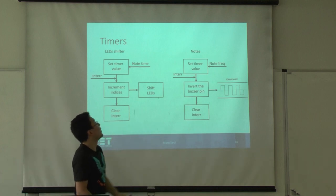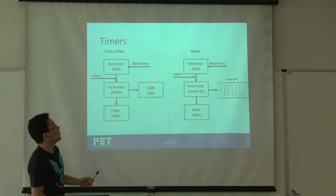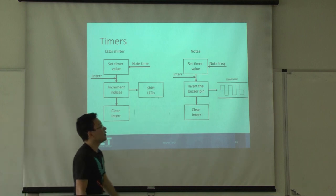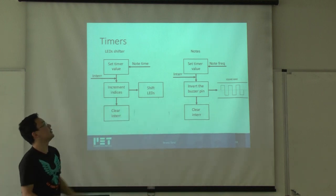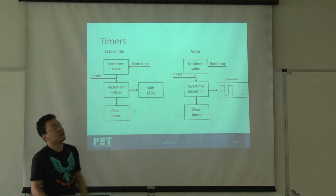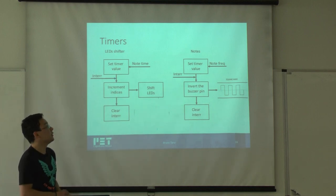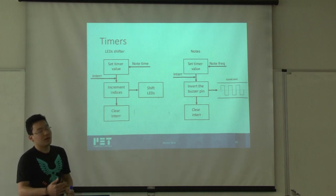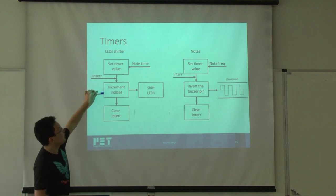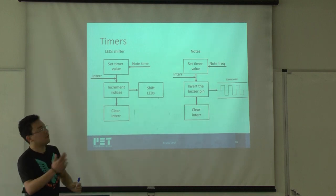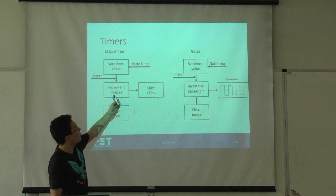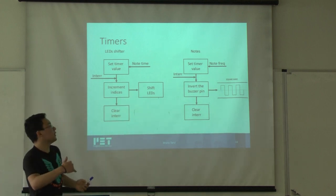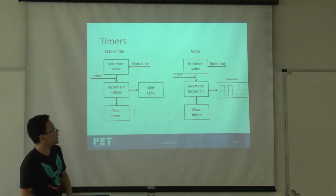Now the timers. I use two timers. One timer is the LED shifter that is responsible to change the notes in the music, and another timer to play the buzzer, play the notes actually. The first timer, the LED shifter, receives a value of the timer, the note duration from the tempo vector. They will begin to count. When they reach the value of the duration of the note, they send an interruption to the microcontroller to enter this function. This function increments the indices. So it was playing the first note, after the interruption we play the second note. Incrementing the indices also shifts the LEDs, so the LEDs come down one line. Then clear interruption and back to the main function.